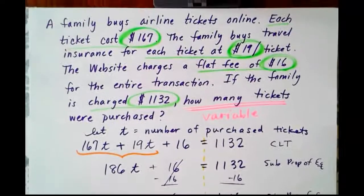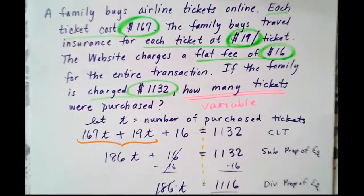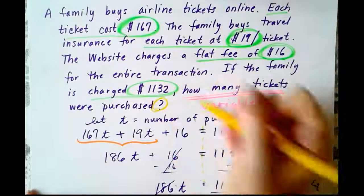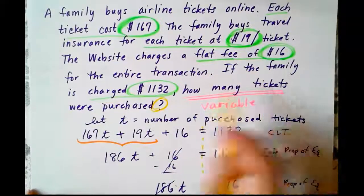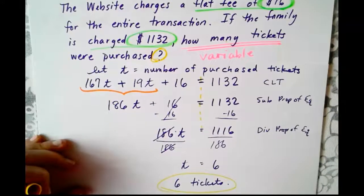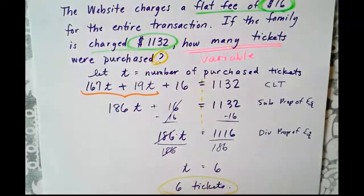Another quick thing you can do to make sure your answer makes sense is go back. Look for that question mark in the problem. How many tickets were purchased? Six tickets were purchased. Our answer makes sense. I believe that we're done with this problem.